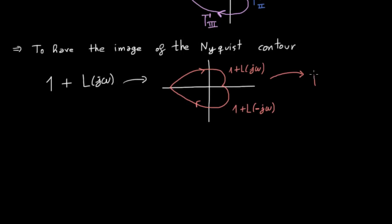Now, we can count the number of encirclements of the origin. According to the previous results, that number is going to be equal to the number of closed loop poles in the right half plane minus the number of open loop poles in the right half plane.